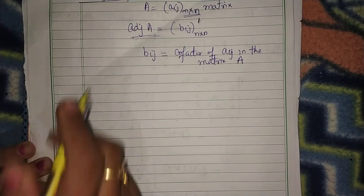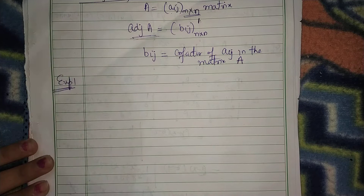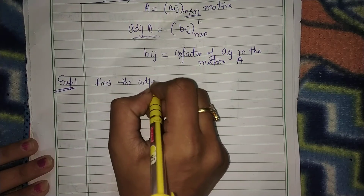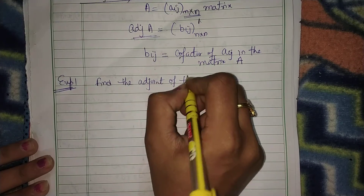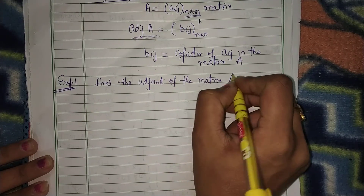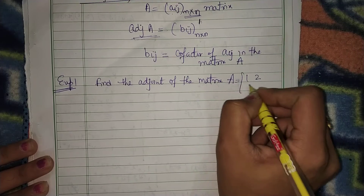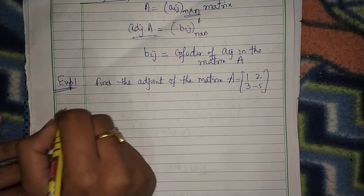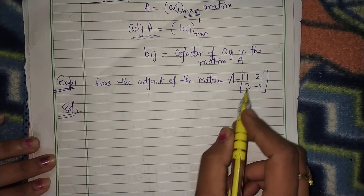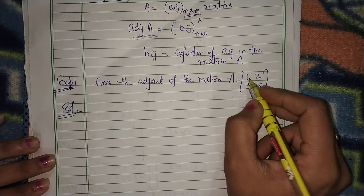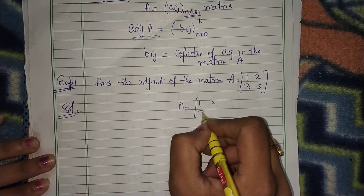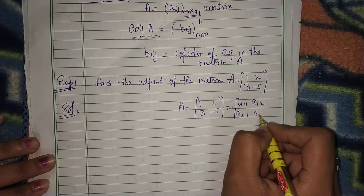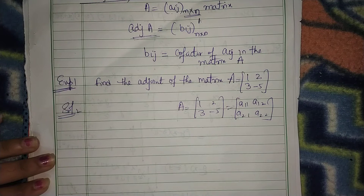What is adjoint? Example number 1. Find the adjoint of the matrix A which is equal to [[1, 2], [3, -5]]. We have to find the adjoint of this matrix. Solution. This is your A equal to [[1, 2], [3, -5]], where the entries are A11, A12, A21, A22.